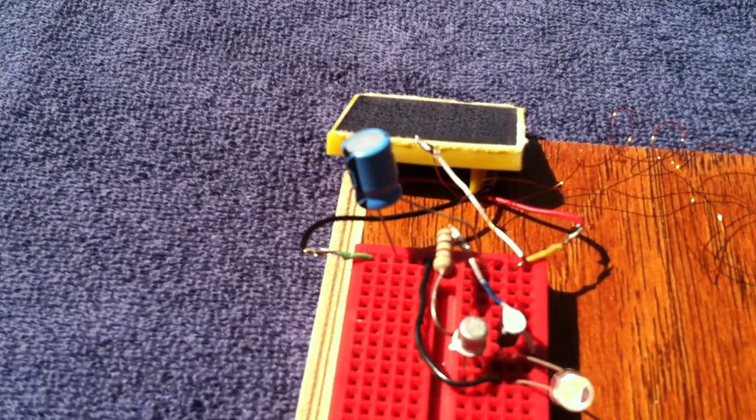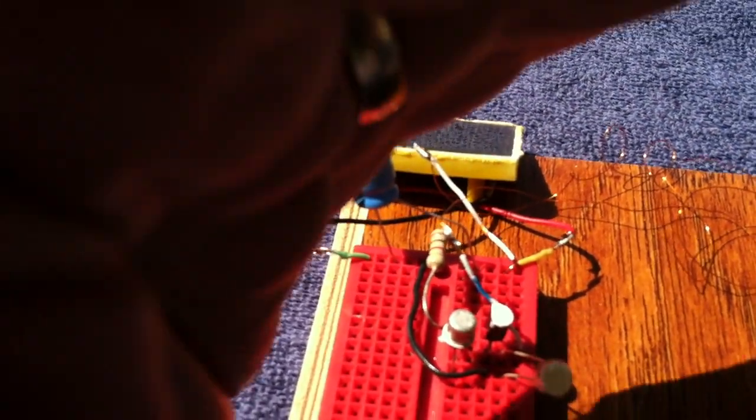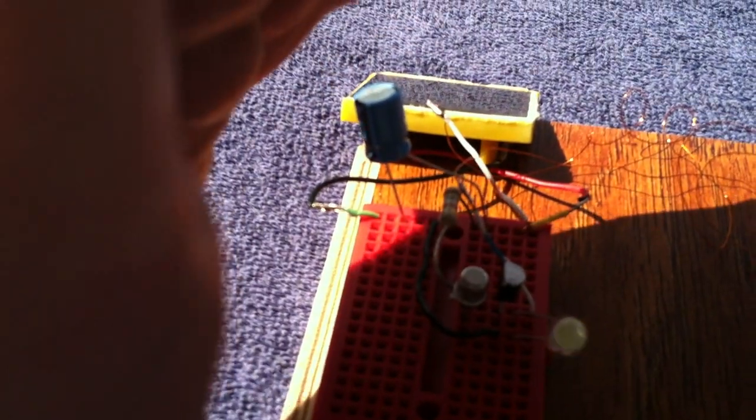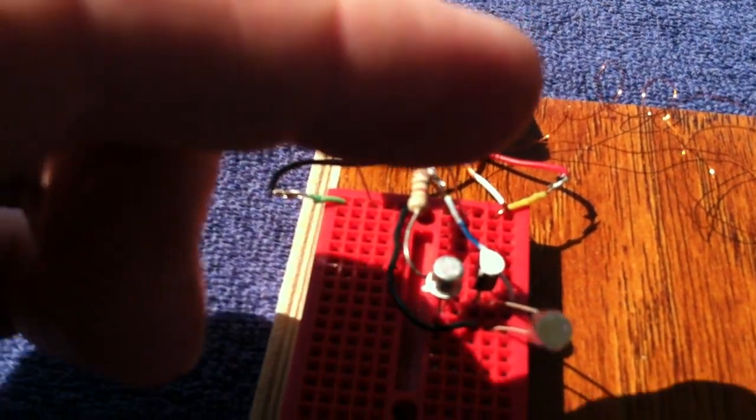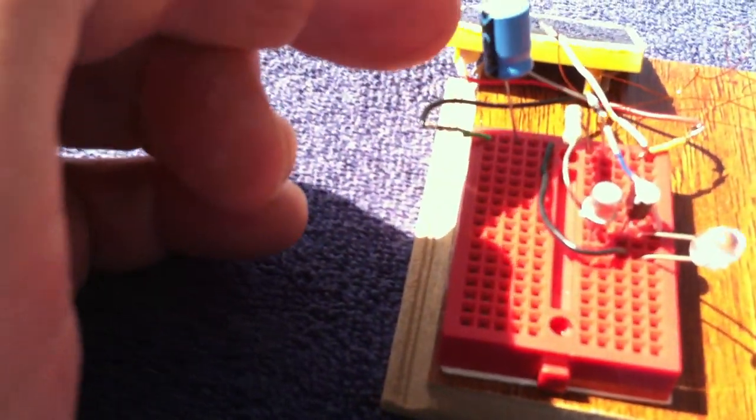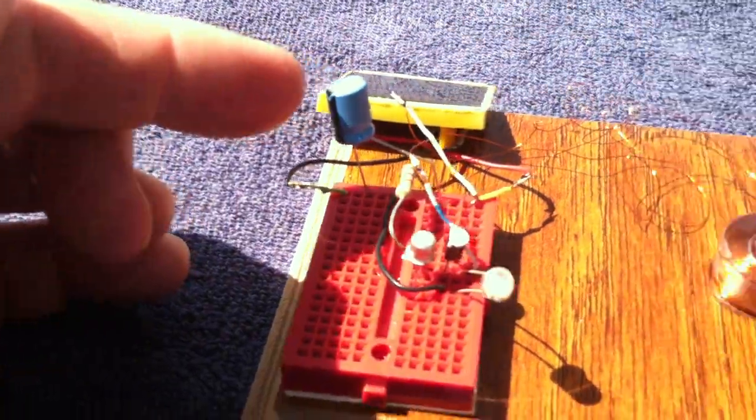The solar panel is out of a solar garden light, and the capacitor helps store the energy here in between the pulses.